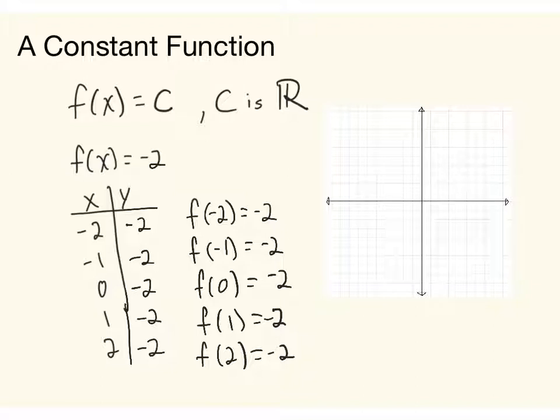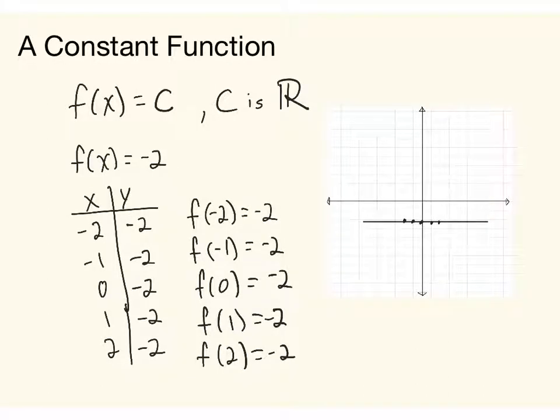So in this case, if I go to my graph and plot these ordered pairs, so if I go to negative 2, negative 2, negative 1, negative 2, 0, negative 2, and if we continue with these, you will see that what we will have here is a horizontal line through these points at y equals negative 2.